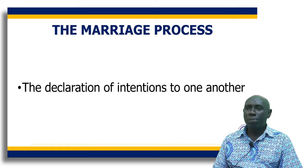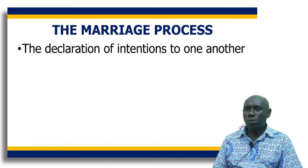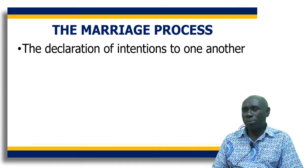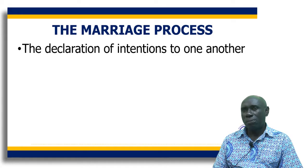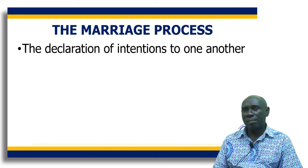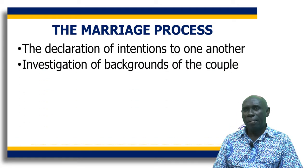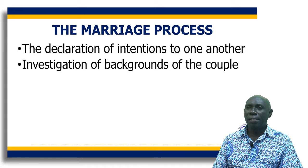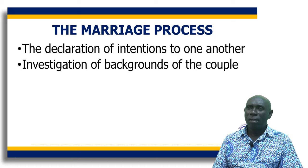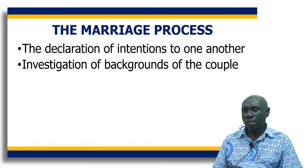The marriage process. First, it begins with the declaration of intentions to one another — the couple themselves will have to declare their intentions to each other. And then they normally inform their parents or relatives.